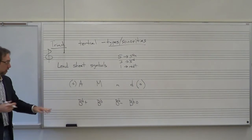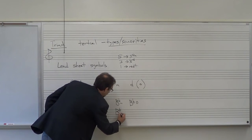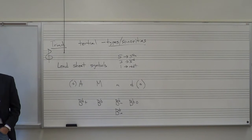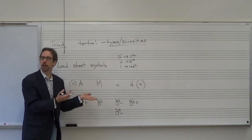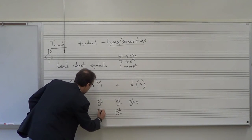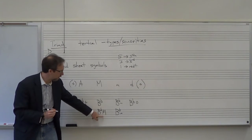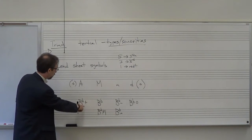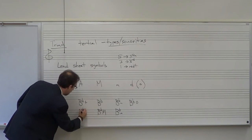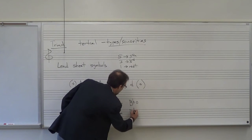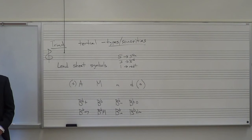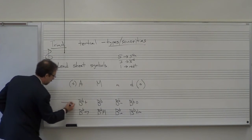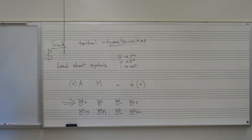Some other options: sometimes people write B-flat with a lowercase m. I don't like that because sloppy writers make it hard to distinguish upper from lowercase, whereas a minus sign always looks like a minus sign. Sometimes for major, people write an uppercase M — but sloppy writing can confuse M and m. Sometimes people write out A-U-G for augmented, or D-I-M for diminished. You will sometimes see those as lead sheet symbols. But the plus/minus/circle system is the one I recommend — it's the most common and quickest to read.